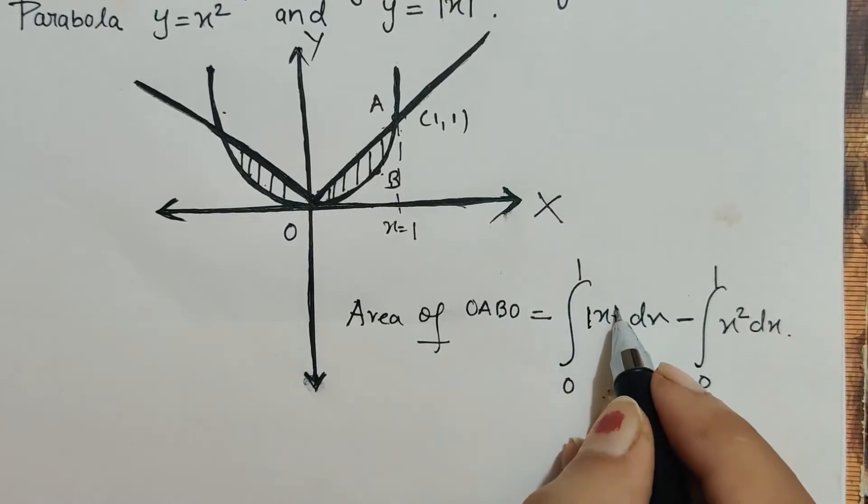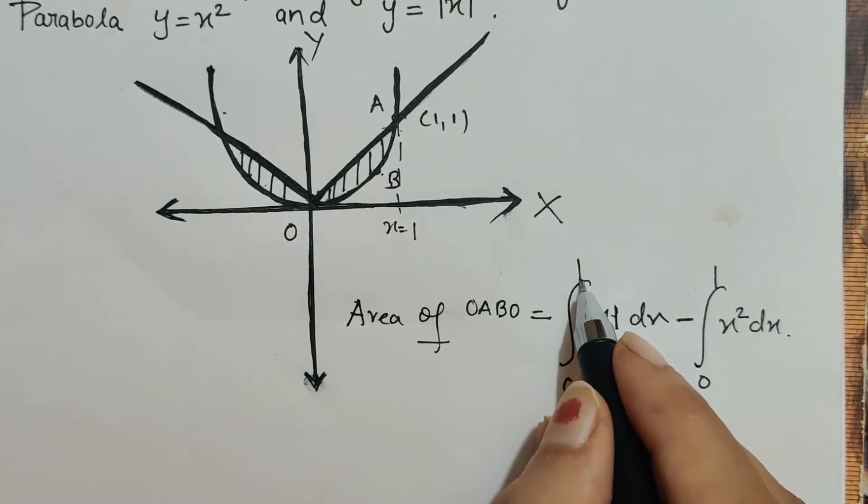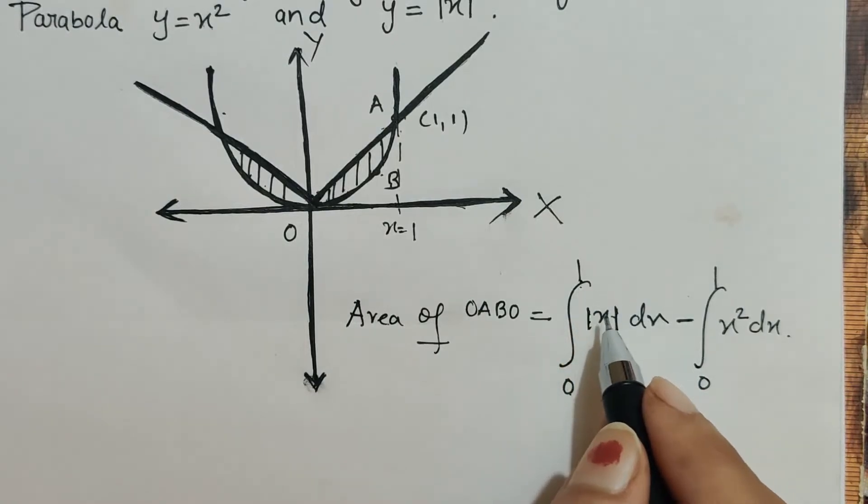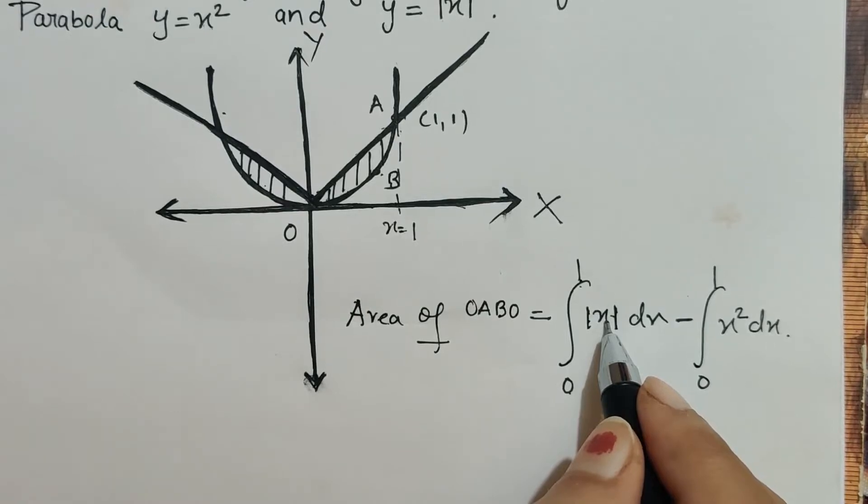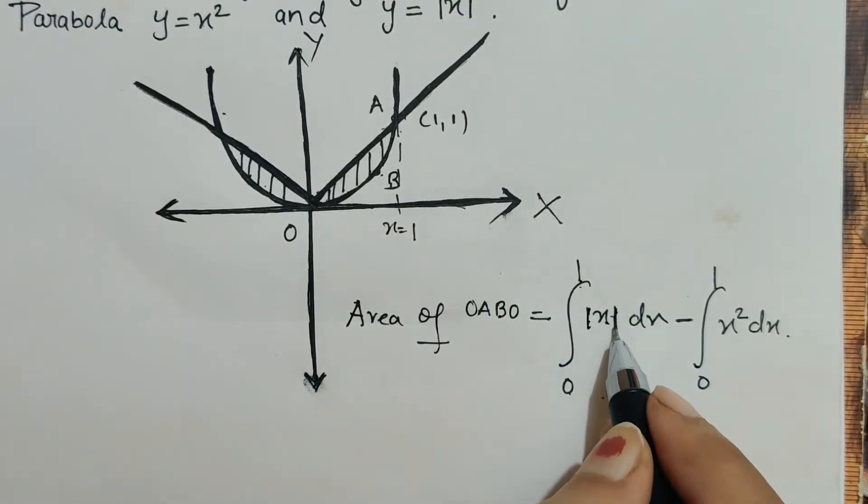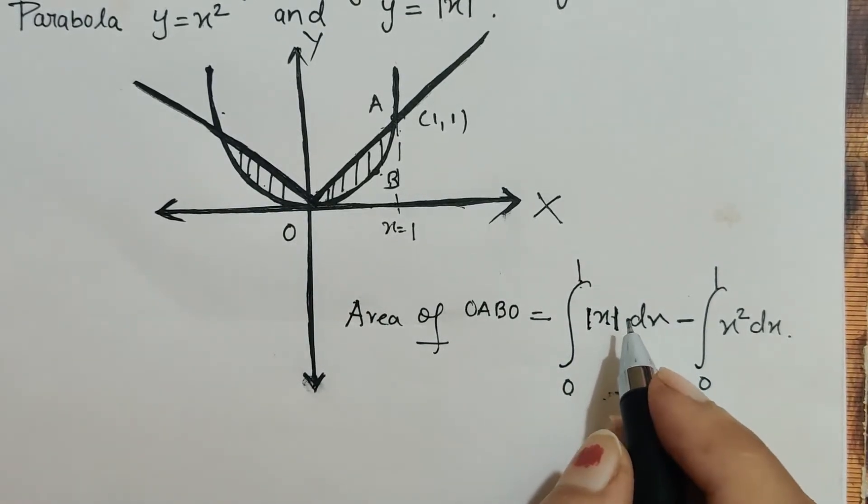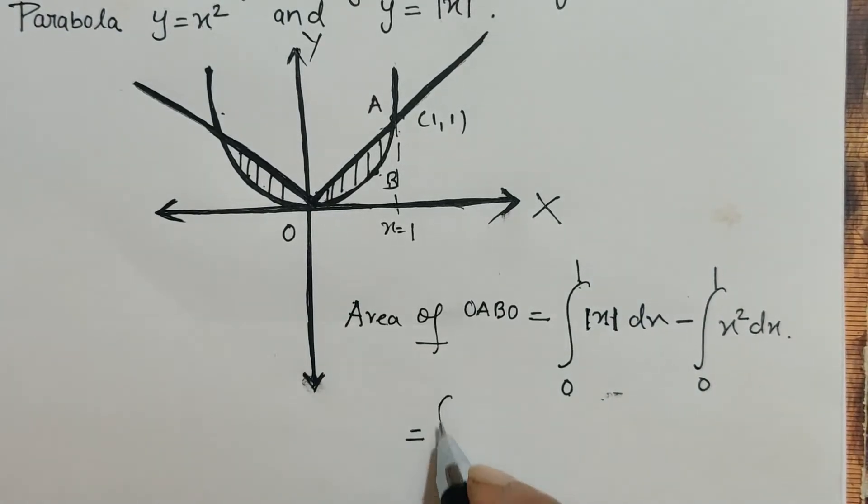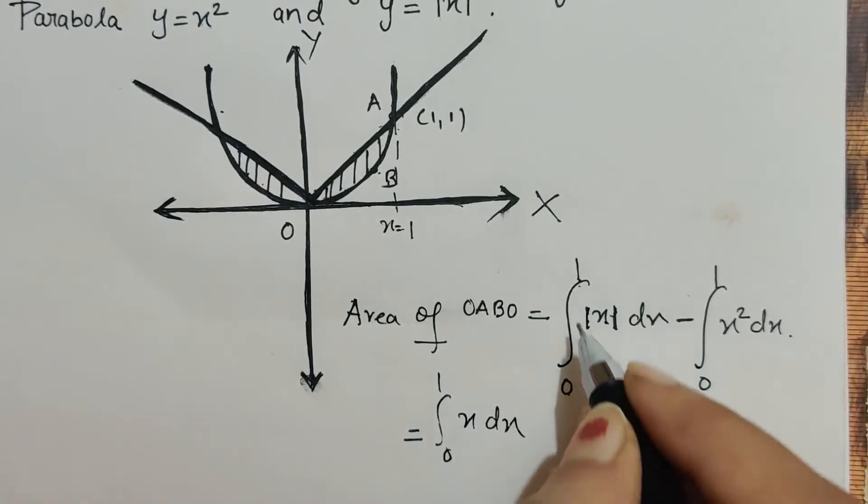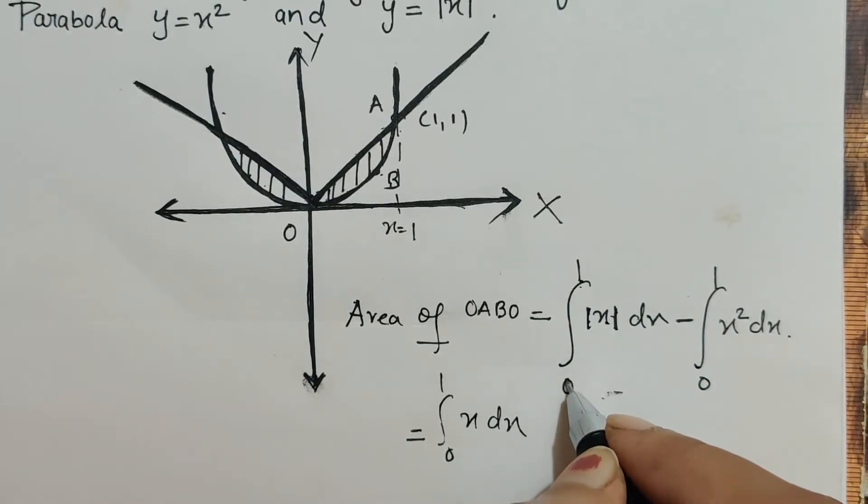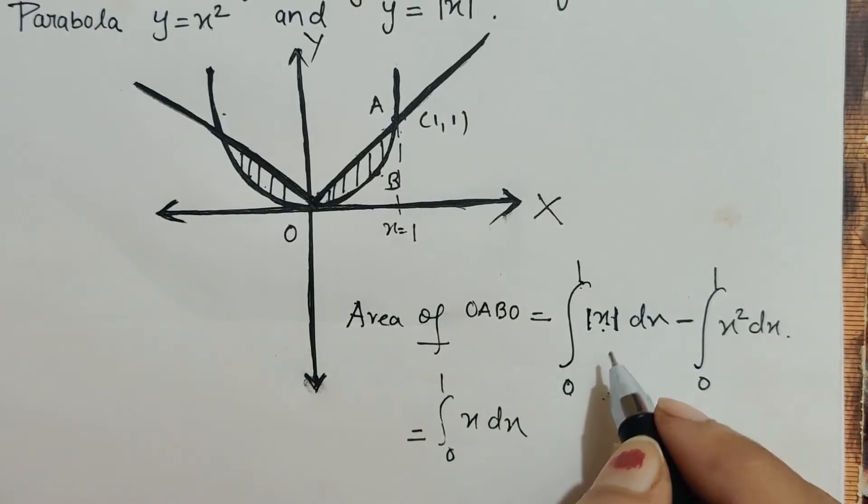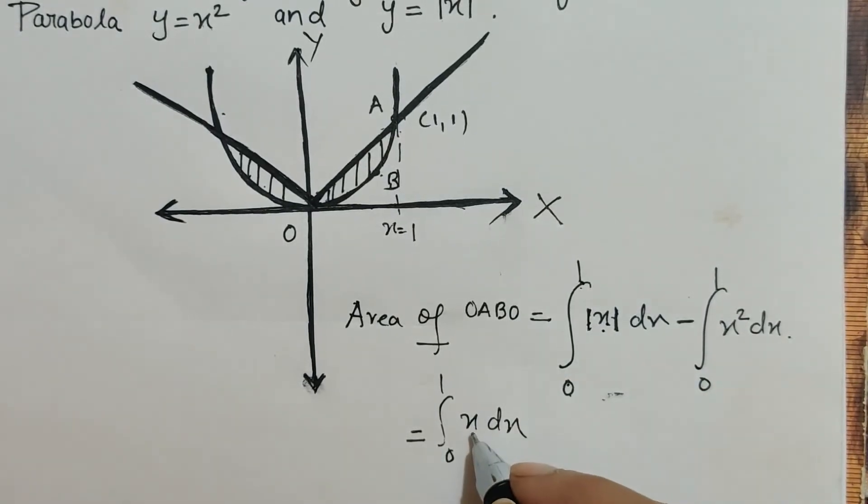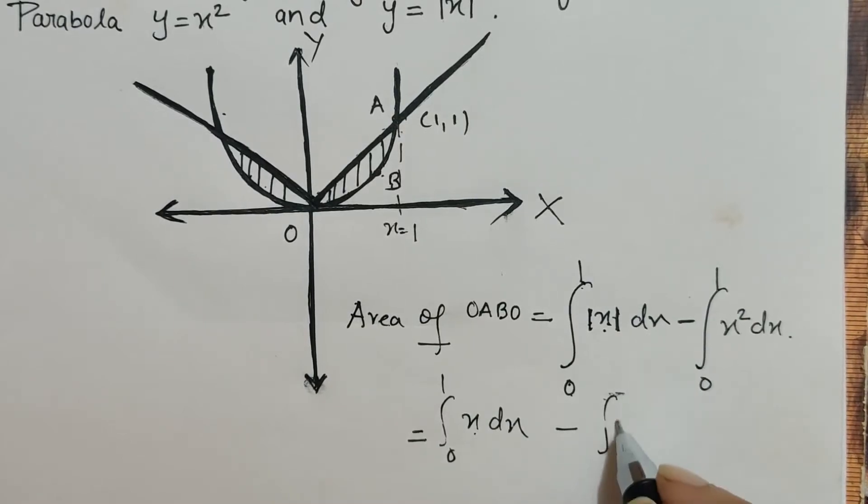Now we will remove the mod sign by putting any value which lies from 0 to 1. So let us take 0.5. If I put 0.5 in this function, my sign is positive. So I will remove the mod sign with positive symbol. So it will be integral 0 to 1 x dx, because whatsoever number I choose from the limit 0 to 1, the answer is positive only. So I am removing the mod by x, so positive x minus x square dx from 0 to 1.